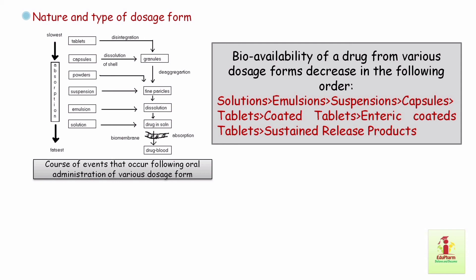The major problem encountered in transferring a solid drug from a compressed tablet to solution in gastrointestinal fluids is the large reduction in effective drug surface area as a consequence of tablet compression. Since dissolution is most rapid from primary drug particles due to their large surface area, disintegration of a tablet into granules and subsequent de-aggregation of granules into fine particles is very important. A number of formulation and processing factors influencing these steps, and physico-chemical properties of the drug substance, influence bioavailability.